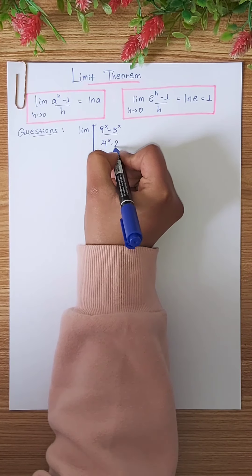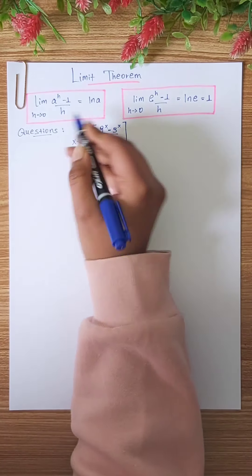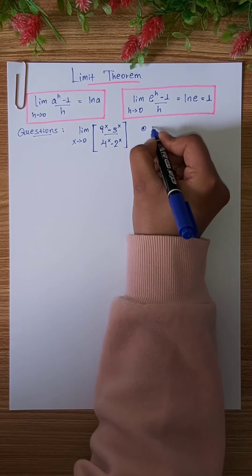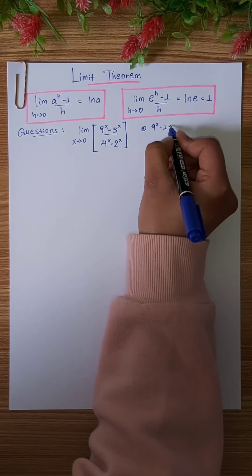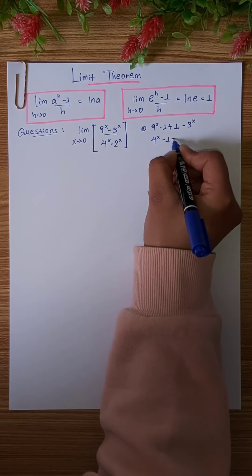Here we have a limit of 9 to the power of x minus 3 to the power of x over 4 to the power of x minus 2 to the power of x as x tends to 0. Here we have a formula.